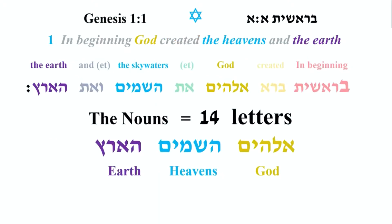If we take the nouns of Genesis 1:1 — Elohim for God, HaShemayim for the heavens, and HaAretz for the earth — the total is 14 letters: Aleph, Lamed, He, Yud, Mem, He, Shin, Mem, Yud, Mem, He, Aleph, Resh, Sadi — 14 letters for all of the nouns. Again, 14 is divisible by 7; 7 times 2 is 14.